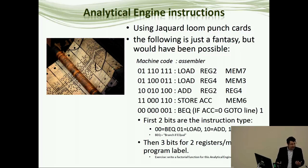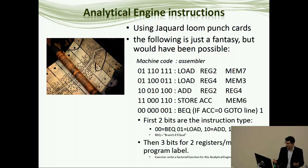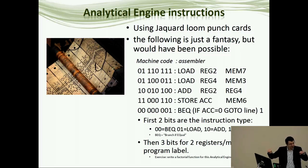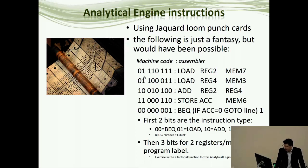We don't have any existing documented programs, so this slide is purely a fantasy — what the instructions for the analytic engine might have looked like. We can see a hypothetical encoding: if you give each line of punch card as an instruction, the first two bits name the instruction (opcode). So 00 could be branch-if-equal, 01 could be load, 10 could be add, 11 could be store — giving four possible instructions. The remaining bits are the operands, telling you what you want to load or add.